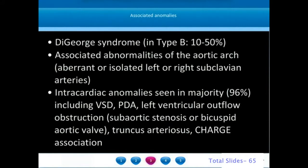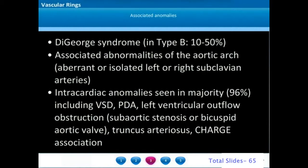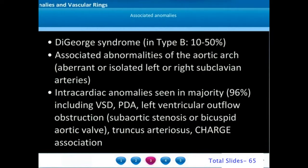22q11 mutations are commonly associated with Type B interruption of the aortic arch. Other problems that may be seen with aortic arch interruption include aberrant subclavian arteries or isolation of subclavian arteries. Aberrant subclavian arteries are subclavian arteries which arise in the post-ductal aorta and course behind the esophagus to emerge on the opposite side to supply the contralateral arm.